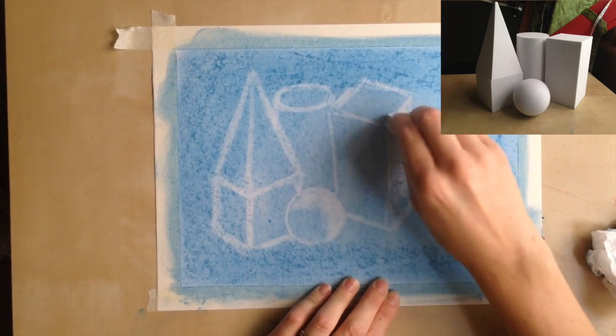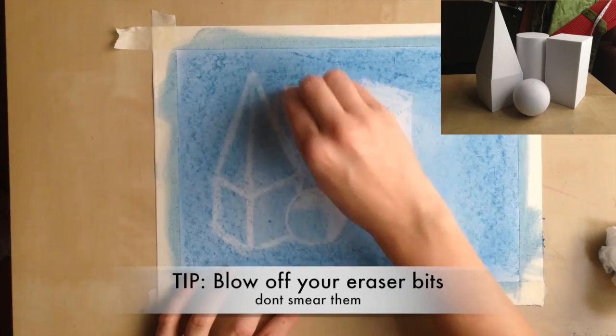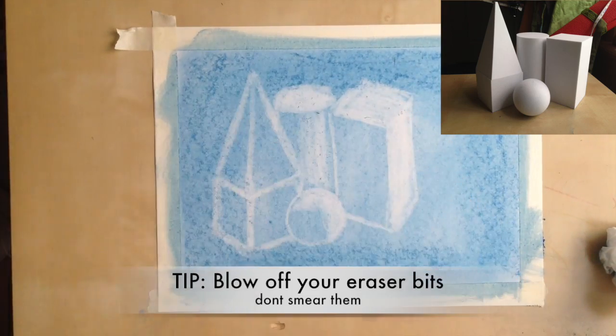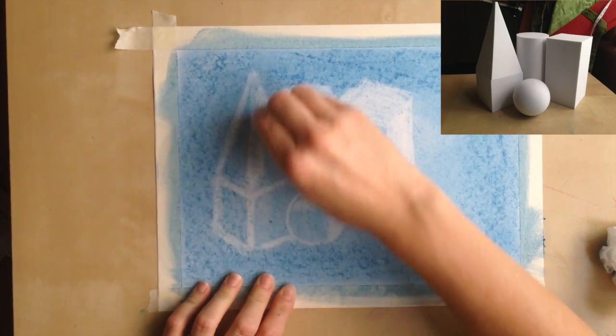This whole part of this one is completely white. So just press lighter to not make it as harsh. And then this front side of this is pretty white.